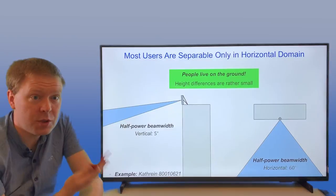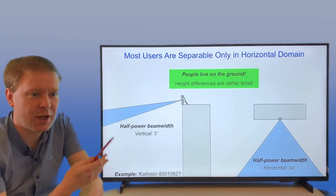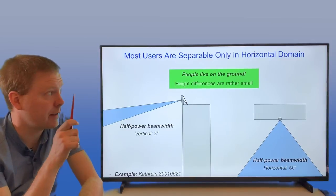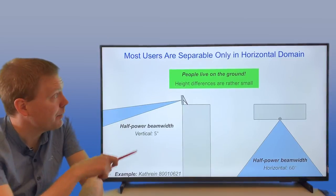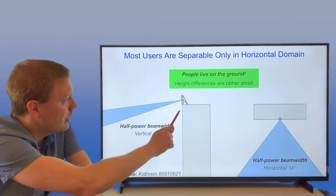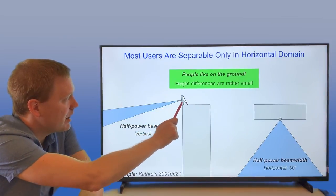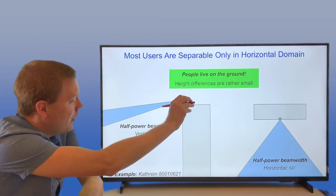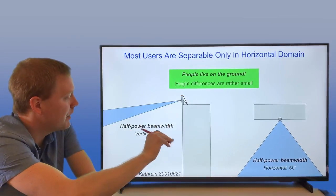That is that most users that you'd like to serve at the same time and frequency are separable in the horizontal domain rather than the vertical domain. Here you're showing the classical array put on the rooftop. It has a down tilt a little bit and then it has a half power beam width of, say, 5 degrees.